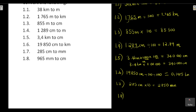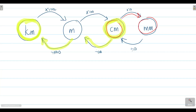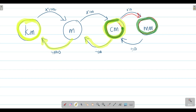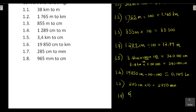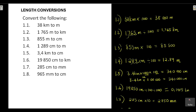Question 1.8: convert millimeters to centimeters. We are at millimeters and want to go to centimeters — smaller to bigger — so we divide by 10. That gives us 96.5 centimeters.